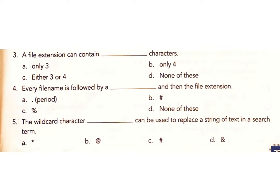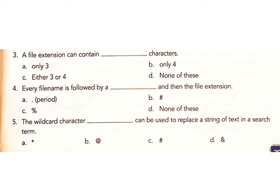Continuing Question 4 options: B) hashtag, C) percentage, D) None of these. Answer: A) A period. Question 5: The wildcard character that can be used to replace a string of text in a search term is: A) Asterisk, B) At, C) Hashtag, D) And. Answer: A) Asterisk.